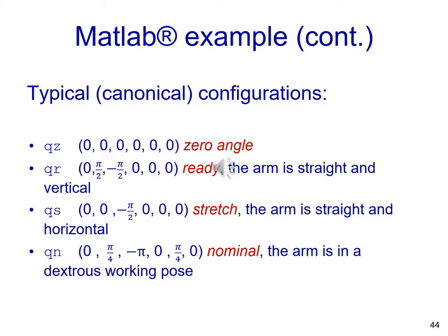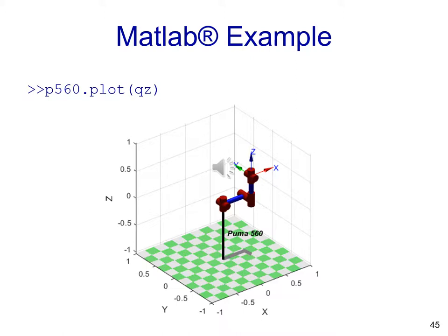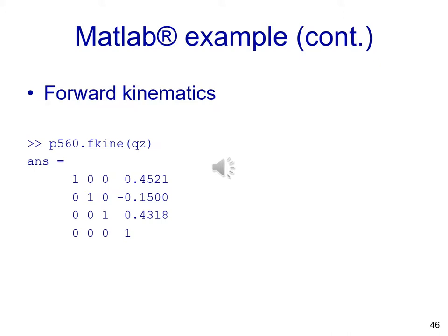Then we can make an example. We have already loaded the PUMA 560 model. We can use the instruction for forward kinematics and just type P560.fkine(QV) and you are going to have the transformation matrix result.